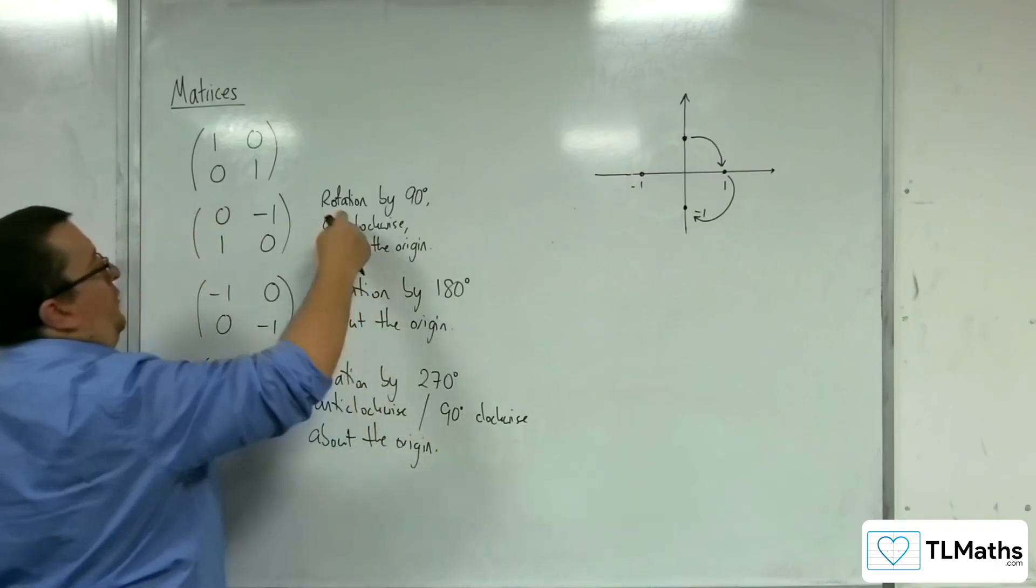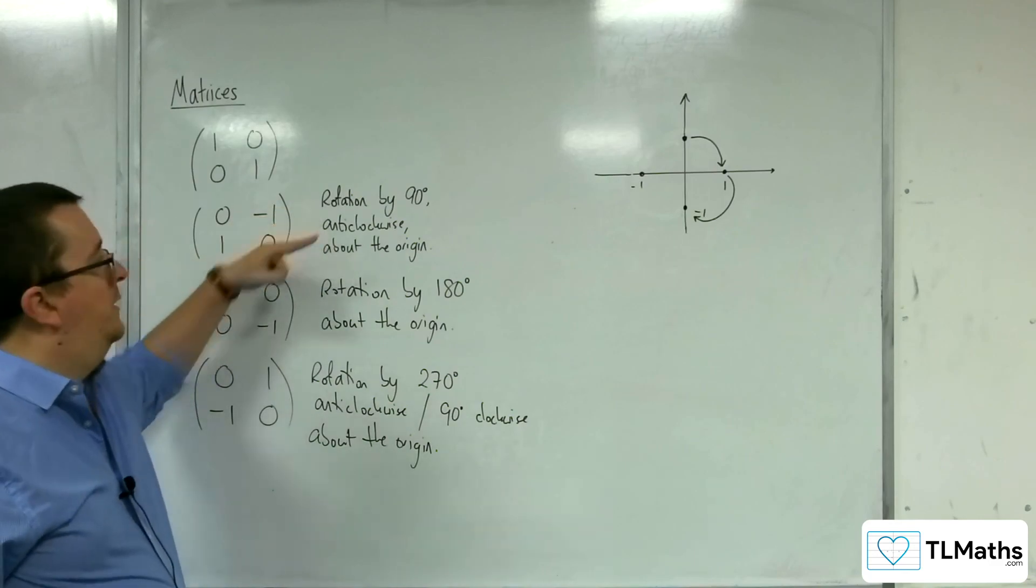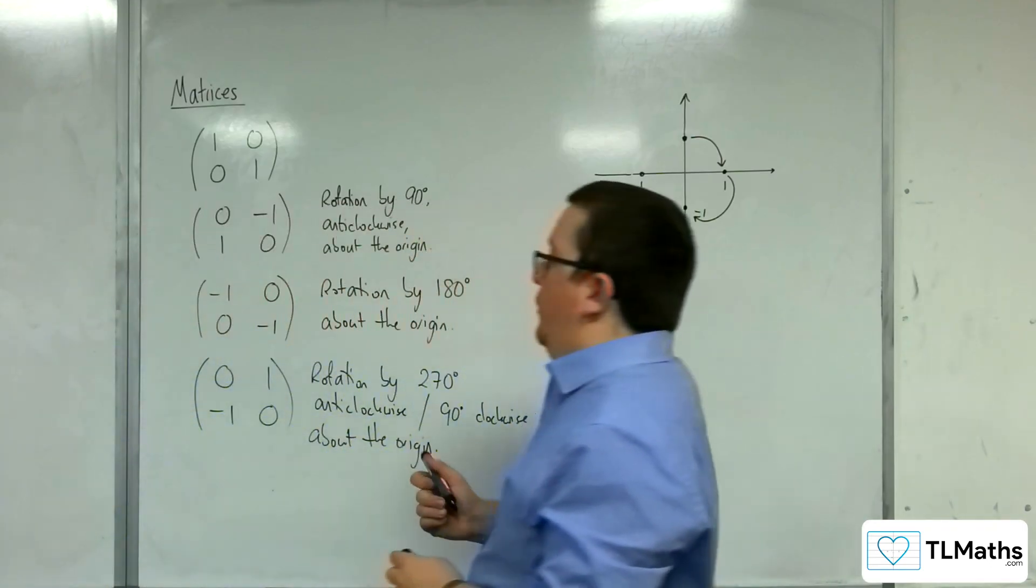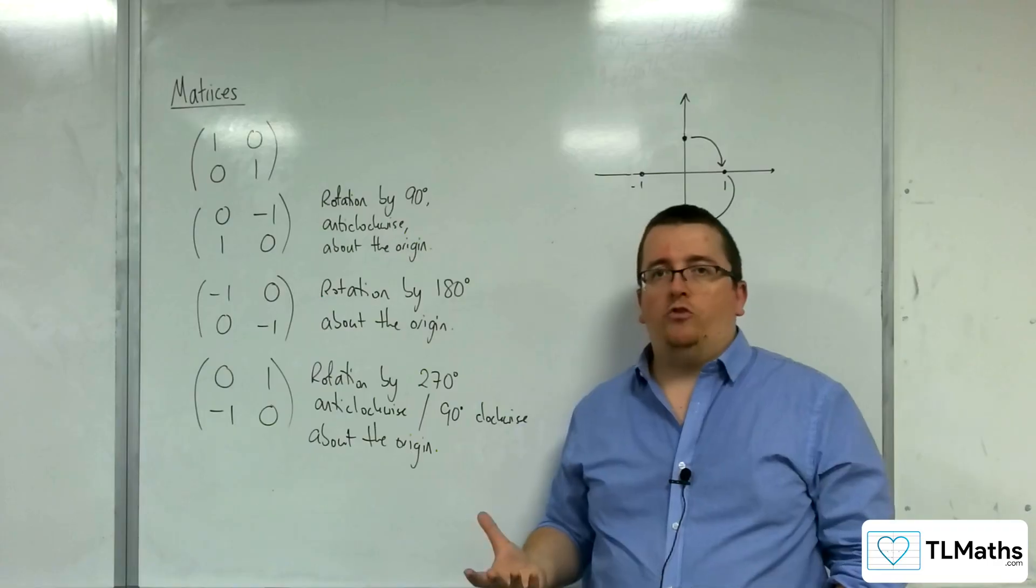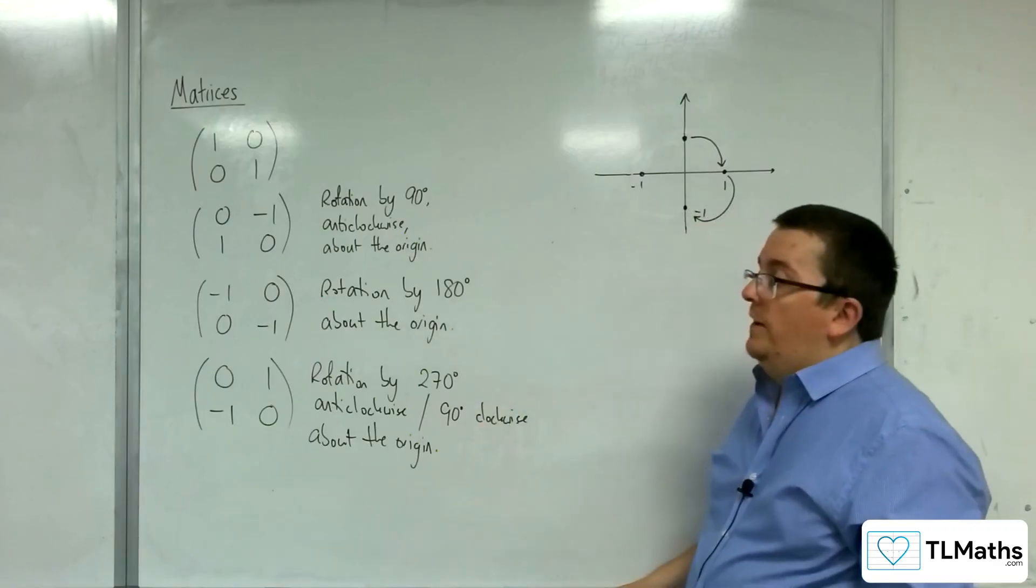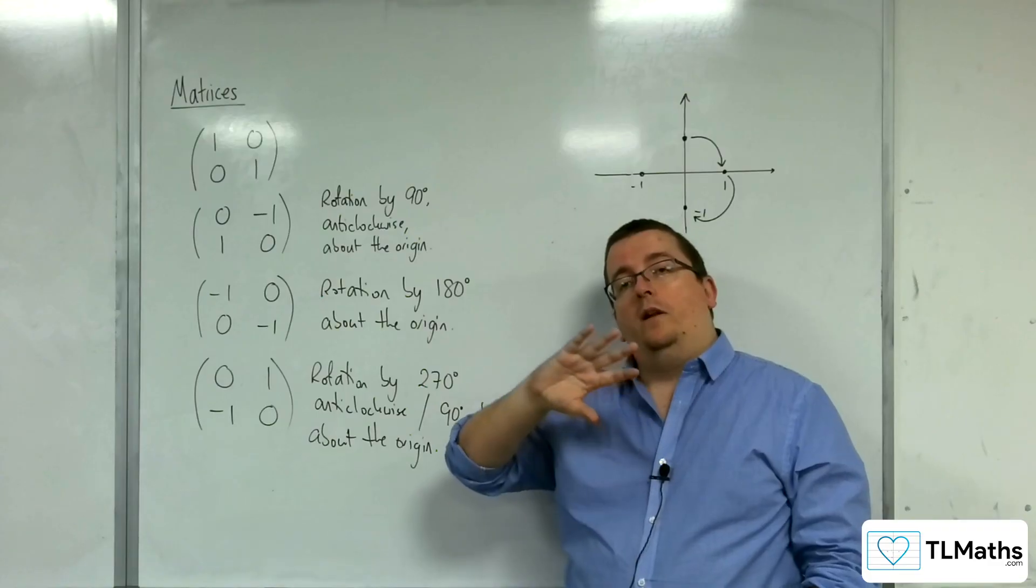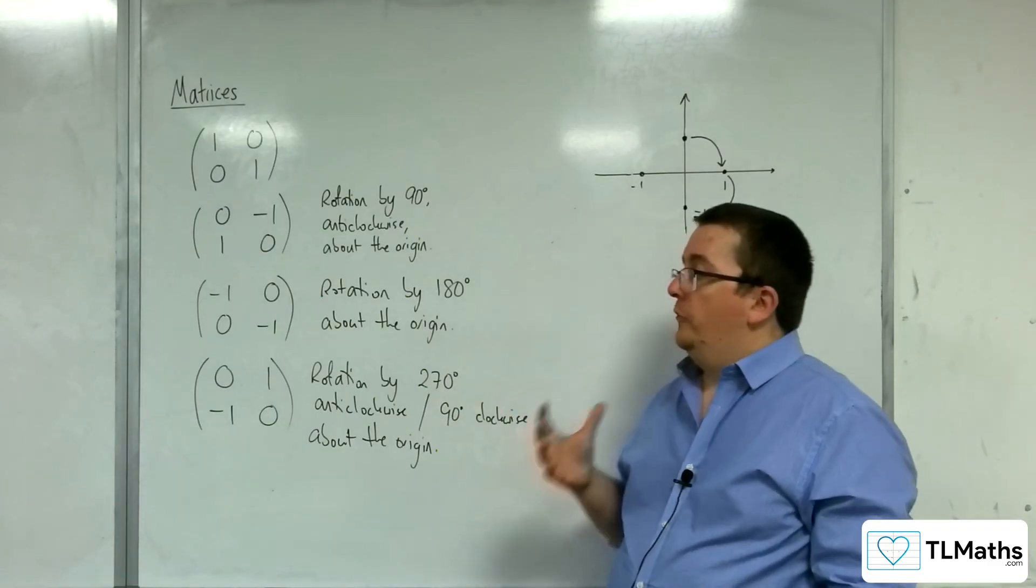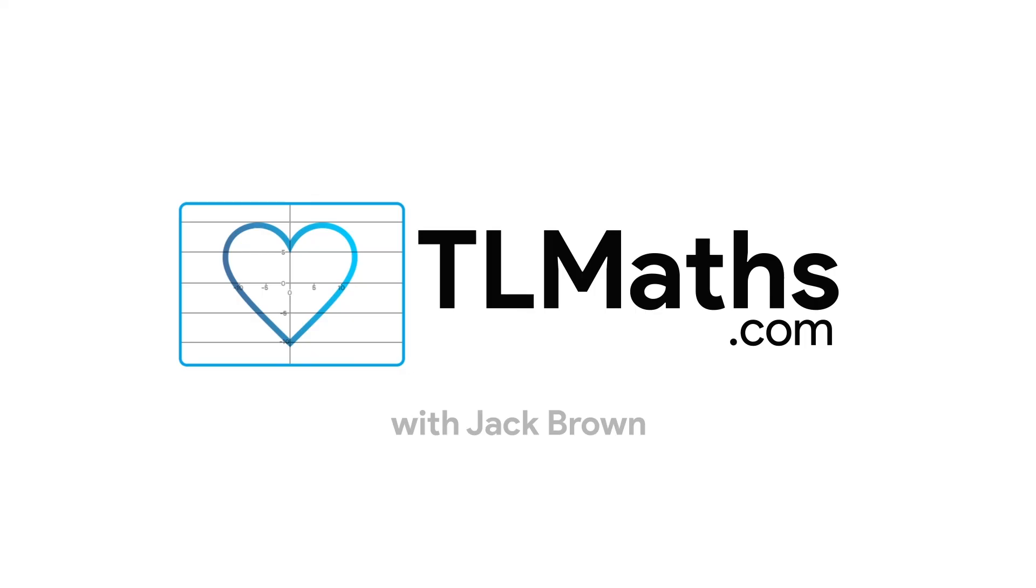Likewise, you could say that that was a rotation by 270 degrees clockwise, if you prefer. And so these represent three of the more important rotation matrices. And as I said, in the next video, we're going to see how we can form a matrix that will allow you to rotate these coordinates round to any degree.